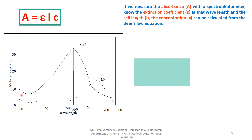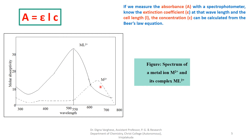We can check whether complex formation occurs by simply taking a UV-visible spectrum. This is the spectrum of a metal ion and its complex ML2+. By plotting wavelength against molar absorptivity, we get a spectrum where the metal ion is different from the complex — different molar absorptivity values and different lambda max (maximum absorption wavelength).